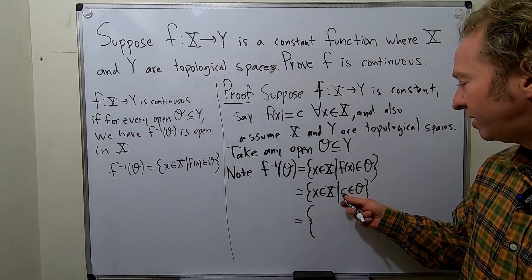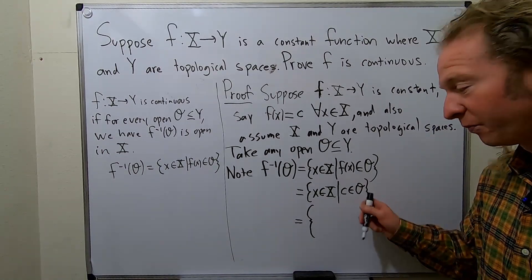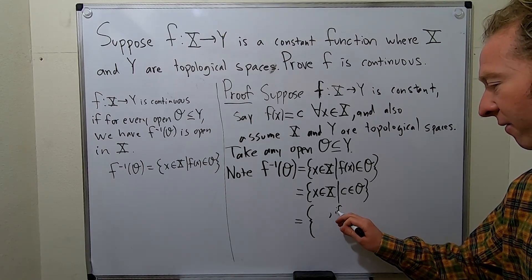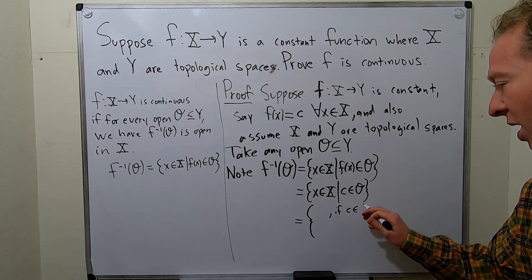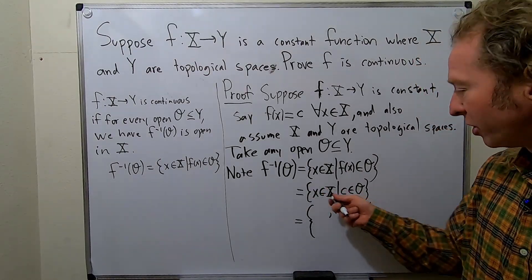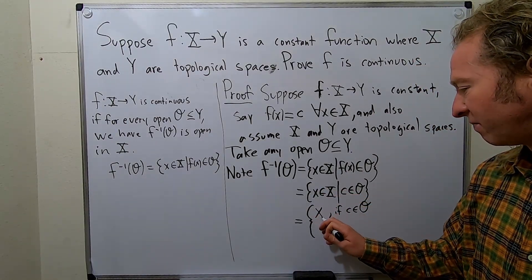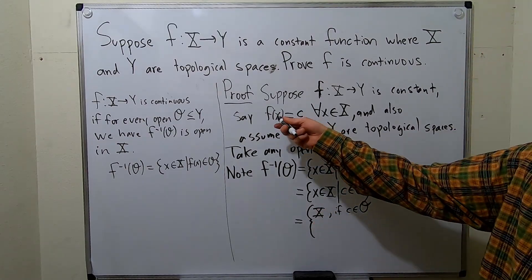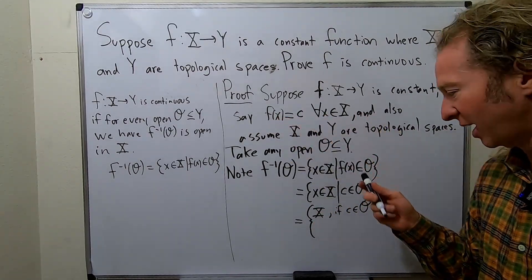So if C is actually in O, right? There's two cases, either C is in O or C is not in O. So if C is in O, then this is always true. So it's just the whole space, right? Because we know that F of x is equal to C for all x in X.